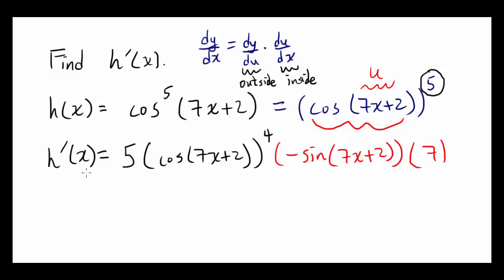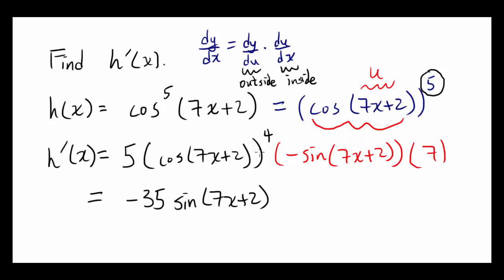Simplifying, we have negative sine, and 7 times 5 gives negative 35. The final answer is negative 35 times sine of 7x plus 2 times cosine to the fourth power of 7x plus 2.